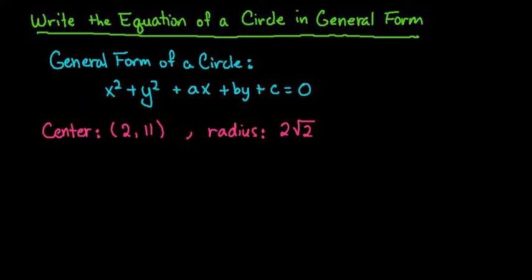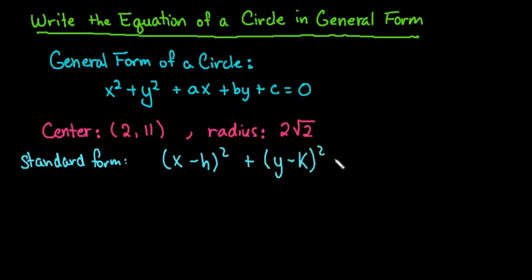What we are going to do is, like I said, we're going to start with standard form. And remember that standard form is x minus h squared plus y minus k squared equals the radius squared, where h and k are the center and r is the radius.